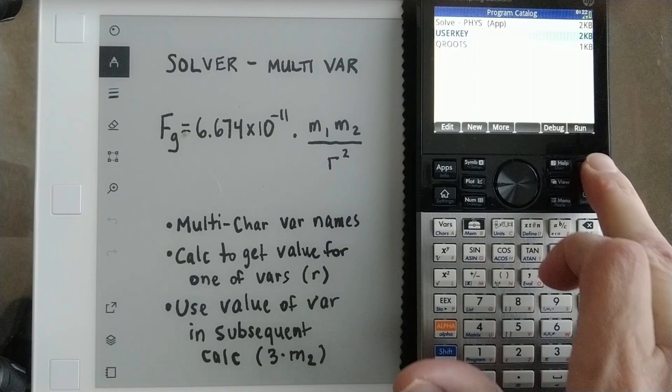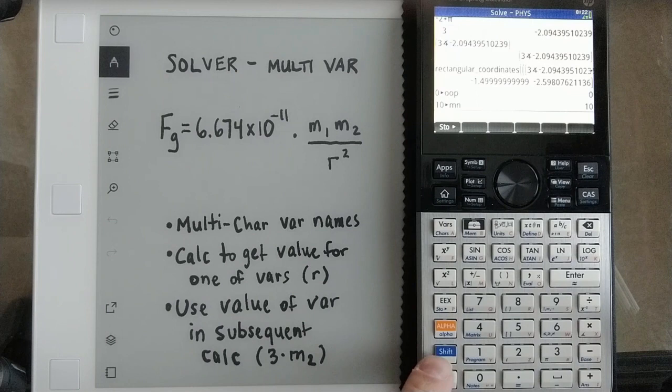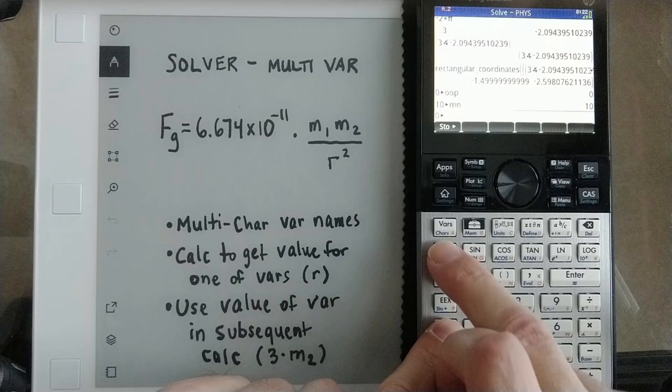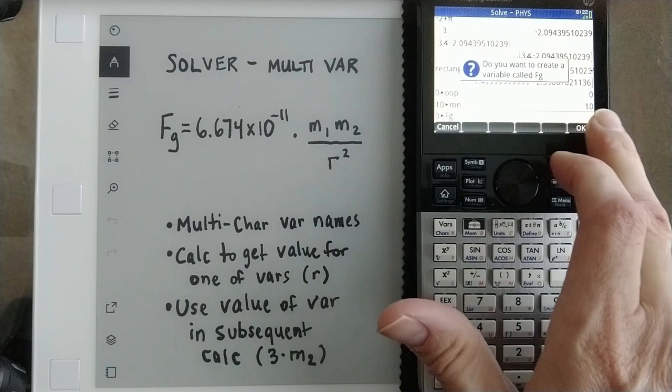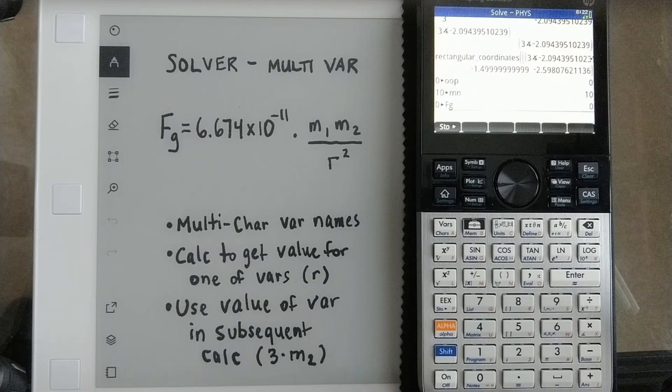So if I wanted to put this in, we could say, we could just start by saying, take 0 and store it in fg. And when you do that, it'll say, do you want to create a variable? Well, that's handy. We'll just say okay. And we could do that for m1, m2, and r as well. So let's do that. m1. Oops. Went out of order.